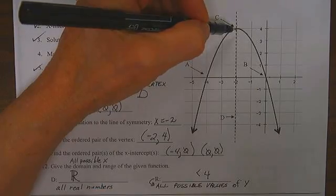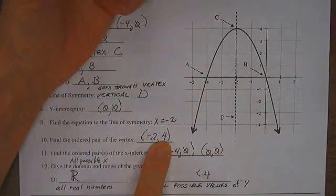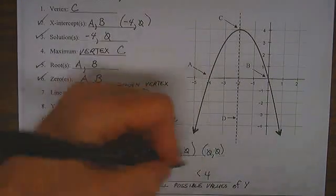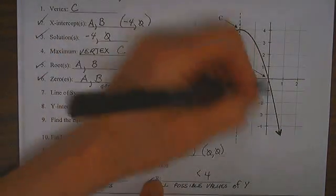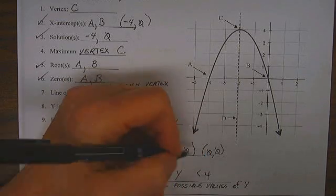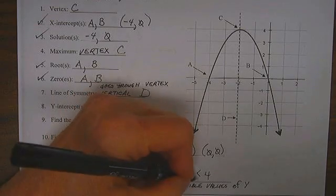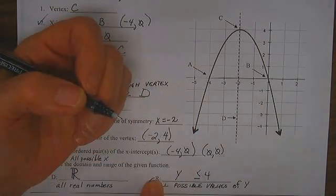Could y be equal to positive 4? Yes, of course it could, because that's the y value of the vertex. Therefore, the range for our parabola here is the set of all y's such that y is less than or equal to 4.